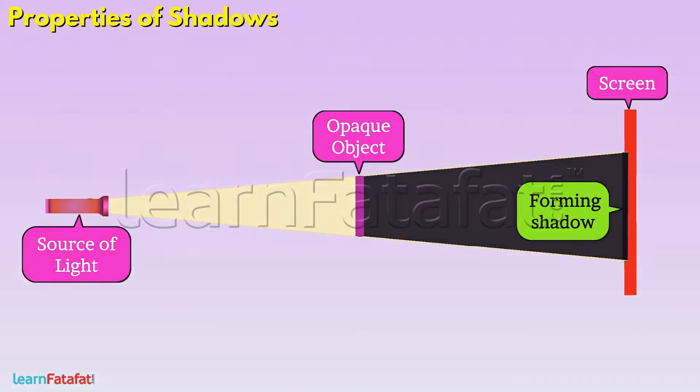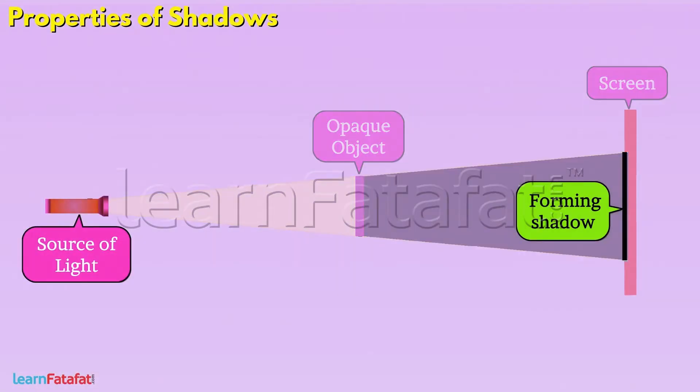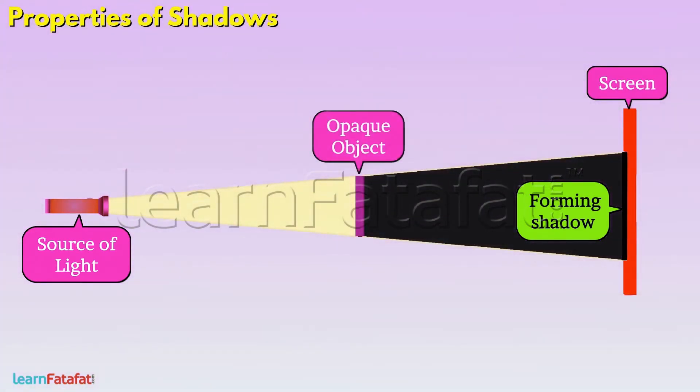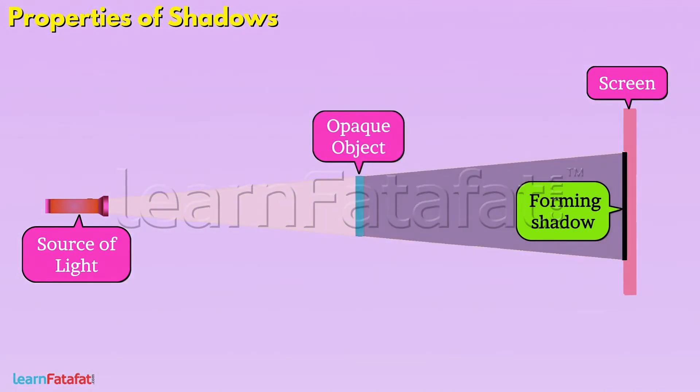Shadows are formed opposite to the source of light and these are always formed on the screen. Even if object is colorful, the shadow of object remains black.